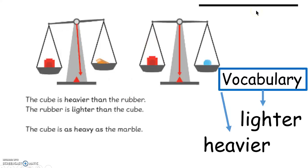Let's compare the weights of these items. The cube is heavier than the rubber. Can you see that the scale goes down further on this side where the cube is compared to the rubber? Now let's compare the cube and the marble.